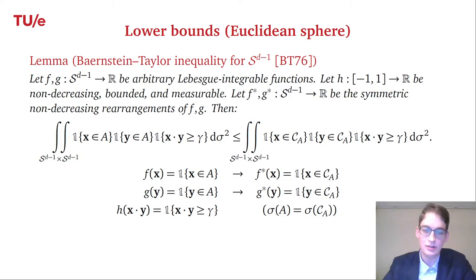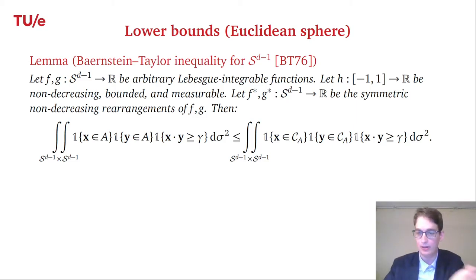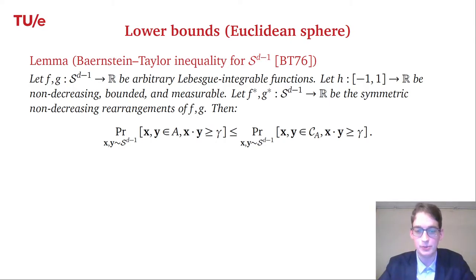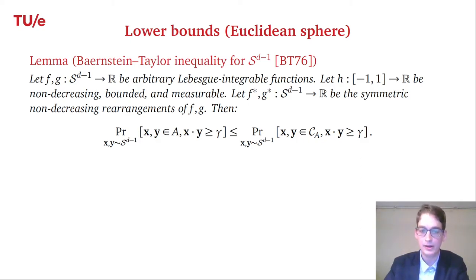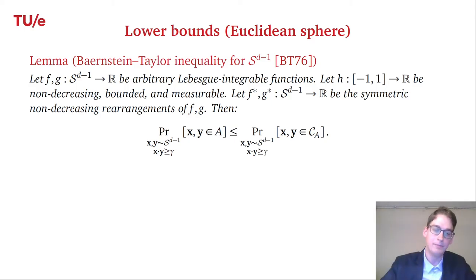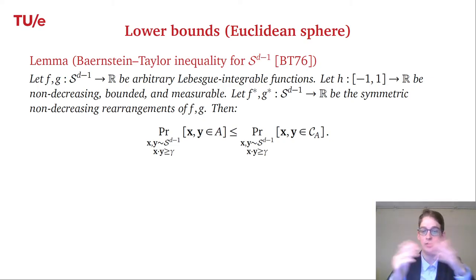Plugging these into the Brascamp–Lieb–Luttinger inequality, the left-hand side becomes the probability that x and y are in A and x·y ≥ gamma, and the right-hand side is the same probability but with A replaced by the spherical cap C(A) of equal volume. Dividing both sides by the probability that x·y ≥ gamma gives us the key inequality: the optimal region A is always outperformed by the spherical cap of the same size.